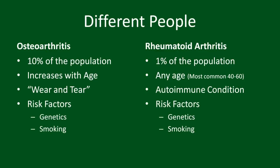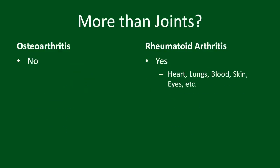While osteoarthritis is limited to the joints, poorly controlled rheumatoid arthritis can start to affect other organs including the heart, lungs, blood, skin and eyes.